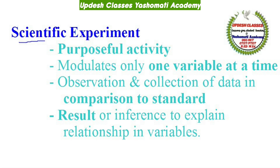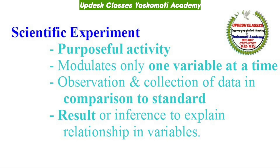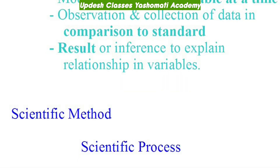Iteration मतलब एक ही scientific experiment को बार-बार करके देखना। ऐसा इसलिए करते हैं ताकि variable का result पर क्या impact है उसे यकीनी बना सकें और अपनी गलतियों को minimize कर सकें। Scientific experiment का replicative होना ज़रूरी है — यानि उस experiment को कहीं पर भी कोई भी करके देखे तो same result आए।